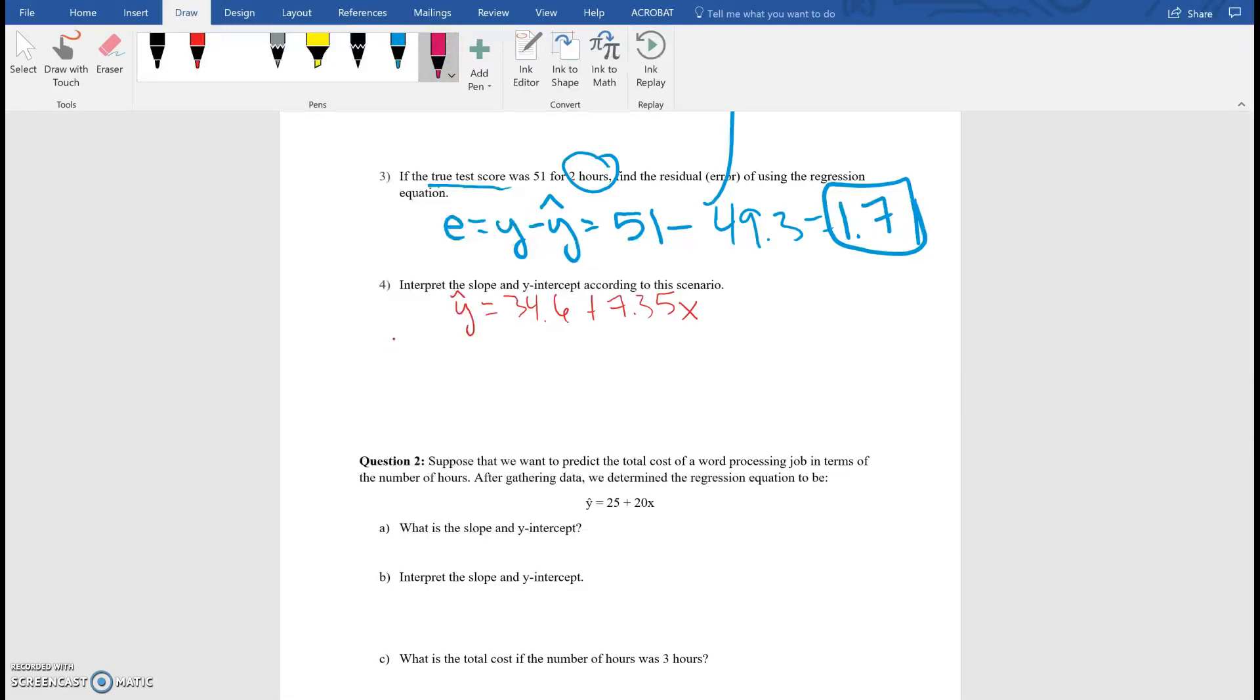So our Y intercept, we said was what? Y intercept is this number right here, 34.6. Now, what exactly does this number mean? Well, if you remember from algebra, Y intercept means that when the X value is 0, what is the Y value? So in this case, when my X is 0, my Y value is 34.6. So in this case, what is my X value? My X value is hours. So when I study for 0 hours, what is going to be my test score? My test score is 34.6 points. So I don't do really good if I end up studying for 0 hours.